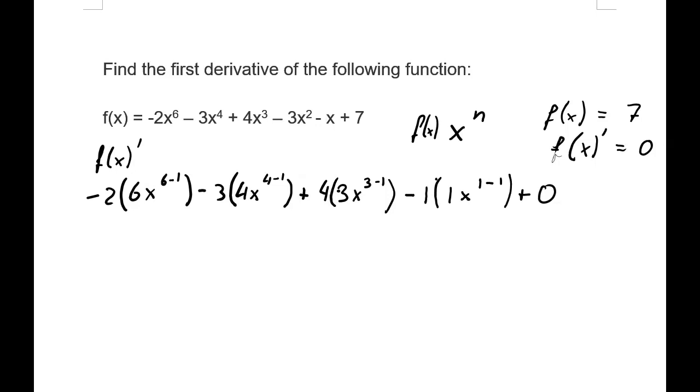We've got -2 times 6x to the power of 6 minus 1, so that's -12x to the power of 5. Minus 3 times 4, that's -12x to the power of 4 minus 1, which gives 3. Plus 4 times 3, that's also 12x to the 3 minus 1, which gives us 2. Minus 1 times 1 times x to the power of 0, plus 0.